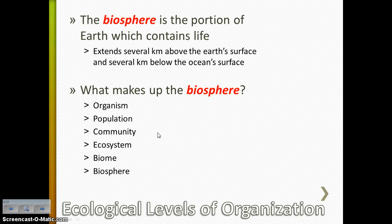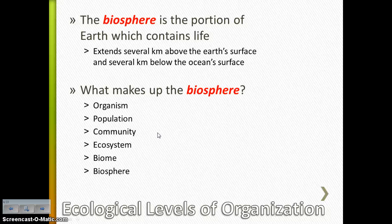The biosphere is about several kilometers above the Earth's surface and about several kilometers below the ocean's surface. So basically, the biosphere is the place on Earth where you have life. The biosphere is made up of smaller ecological levels. Going from smallest to largest, that would be the single organism, then a population, then a community, then an ecosystem, then a biome, and then all the biomes together make up the biosphere.